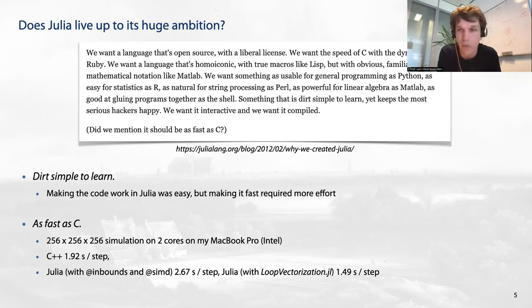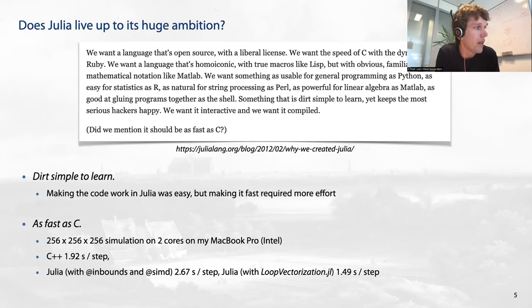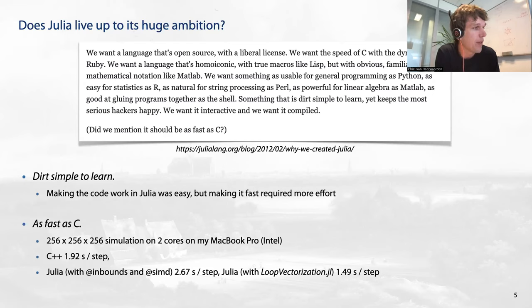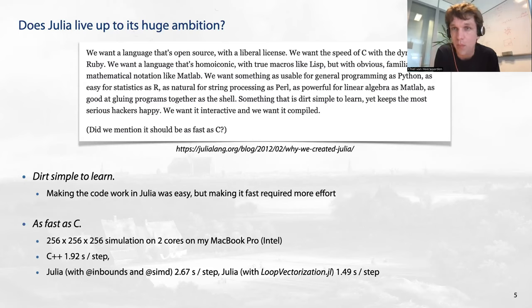As a first glimpse on 'as fast as C': I did a very simple benchmark just to check — taking a simulation with 256 grid points cubed and running that on two cores of my laptop. The C++ runs one iteration of the simulation in 1.92 seconds per step. If I take Julia with just the built-in `@inbounds` to disable bounds checking and the equivalent decorator, it is a bit slower at 2.67 seconds. But if I use the LoopVectorization package — which turned out to be extremely powerful and almost necessary for fast code — it actually outperforms the C++ code by quite a lot.